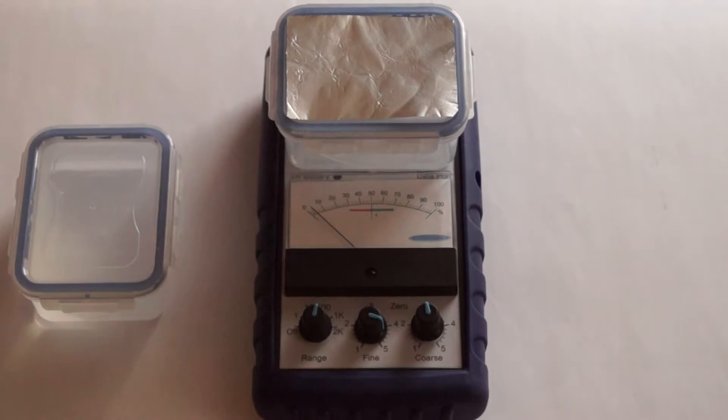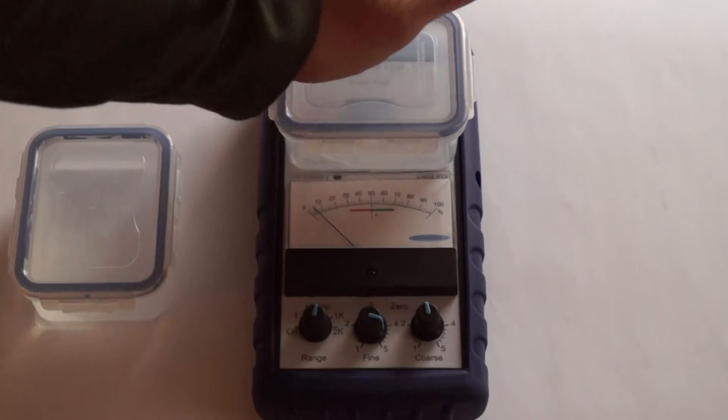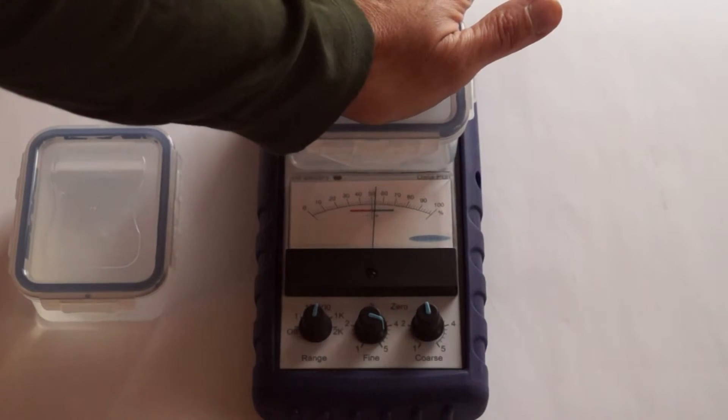Next, we measure again, but this time we use an empty container. The foil reads 5 and the hand reads 52. This is a ratio of 10 on the x100 scale.